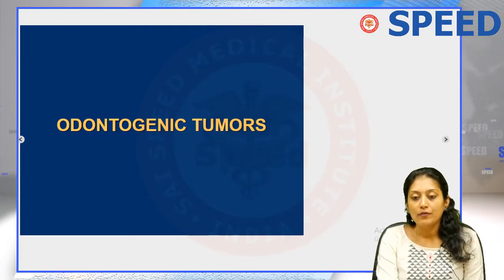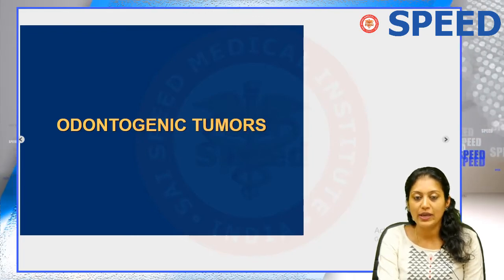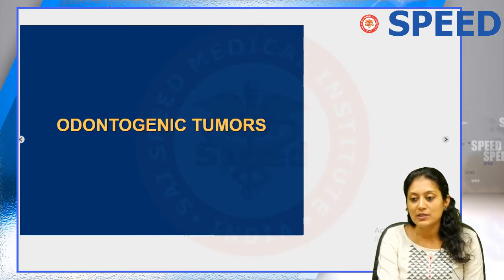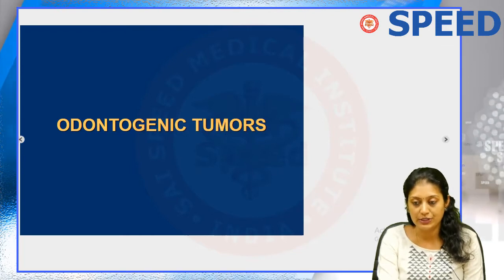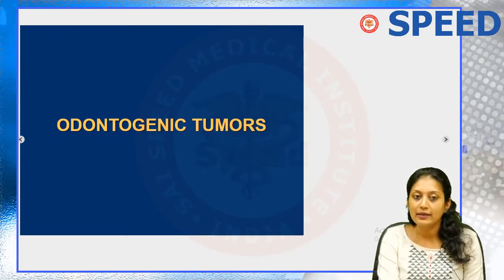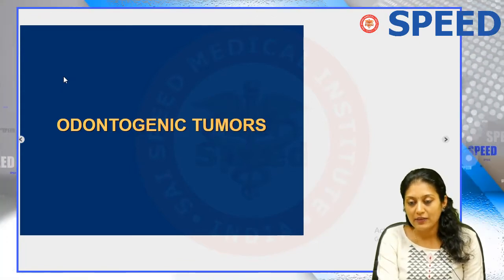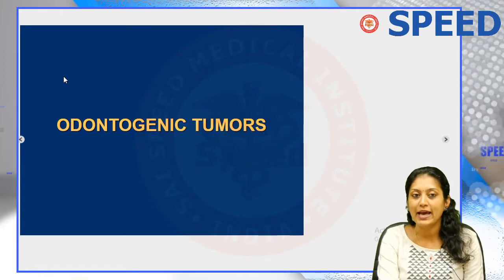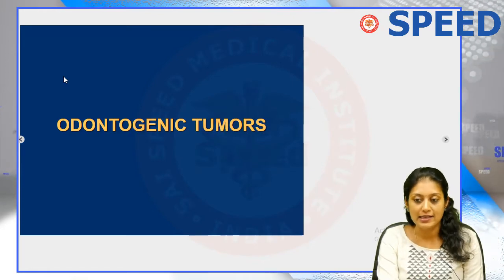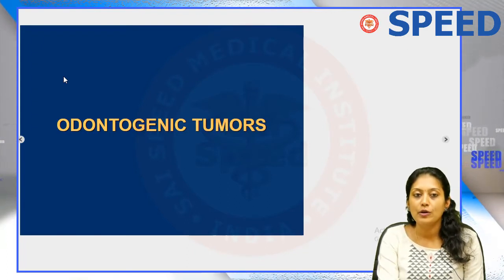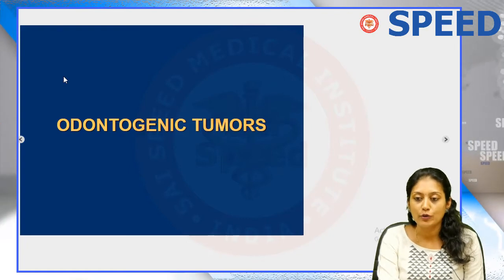In the last class we discussed that there are two types of odontogenic rests: the cell rests of Serré, which are remnants of the dental lamina, and cell rests of Malassez, which are remnants of Hertwig's epithelial root sheath. When these are stimulated, odontogenic cysts can arise from them. Similarly, instead of a cyst, an odontogenic tumor can also arise from these cell rests. So these two cell rests are not only the origin for odontogenic cysts but also form an etiology for the development of odontogenic tumors.